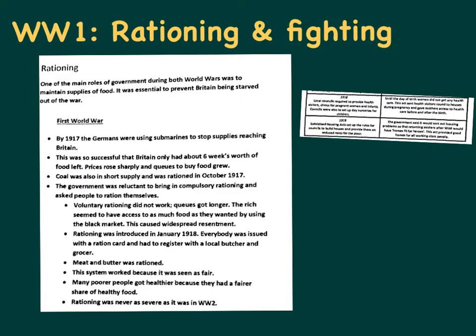In World War I, more changes occurred which helped reduce social divisions between classes, particularly rationing. One of the main roles of government was maintaining food supplies - it was essential to prevent Britain being starved out of the war. The Germans surrounded Britain, an island, and tried to prevent food coming in by sea using U-boats - a type of submarine - to sink ships, and also bombed major ports during the Blitz. The government used rationing to try to keep Britain as self-sufficient as possible and tightly control food so everyone got a fair share.